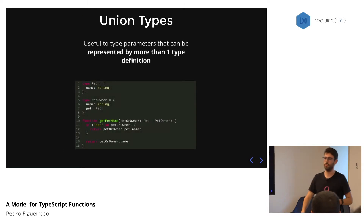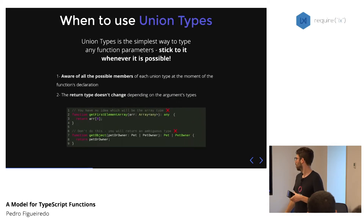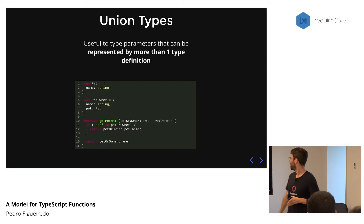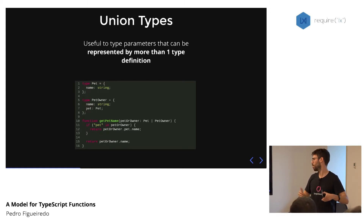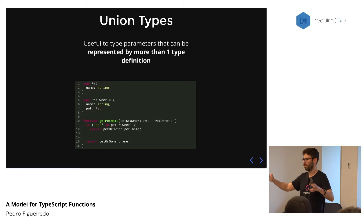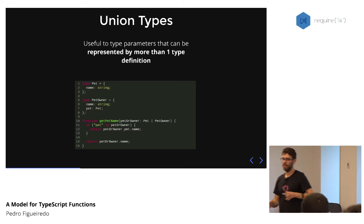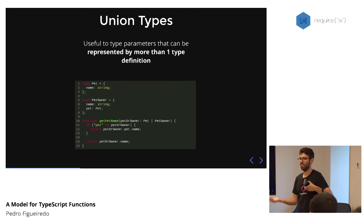Union types are really useful when we have arguments that can be typed with one, two, three, or four different types. They are really simple to use. In this example of get pet name, we have an argument that can either be a pet or a pet owner, and just by using this pipe — we can read it in English as 'pet or pet owner' — we are specifying that this argument must be one of these types. It doesn't get more complicated than that, but that simplicity also means it won't work for most cases.